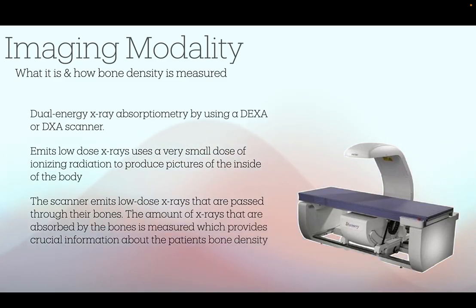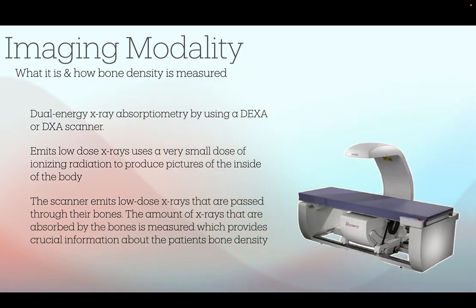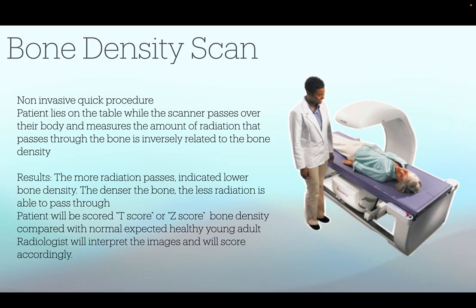It emits a very low amount of radiation, much less than the typical amount emitted during a chest x-ray. Here on the right side we can see a picture of the bone densitometry machine that is used for the exams. This is a non-invasive, quick procedure which takes about 10 to 15 minutes per patient.